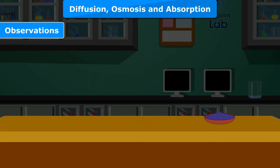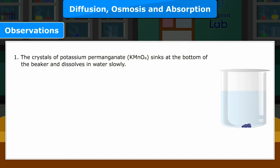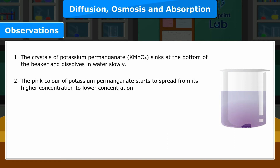Observations: 1. The crystals of potassium permanganate (KMnO4) sink at the bottom of the beaker and dissolve in water slowly. 2. The pink color of potassium permanganate starts to spread from its higher concentration to lower concentration.